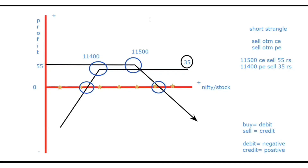And now what we'll do is we'll create the break evens. Yeh point call option ka hai — call option ke point mein apan strike price plus the premium. Strike price 11,500 plus 55 = 11,555 — yeh break even. Similarly put mein: strike price minus premium — 11,400 minus 35 = 11,365.